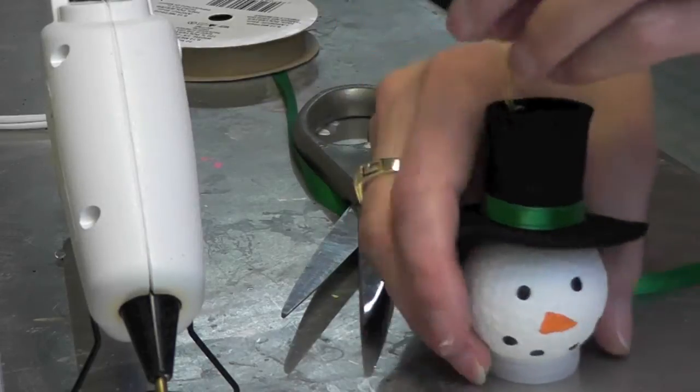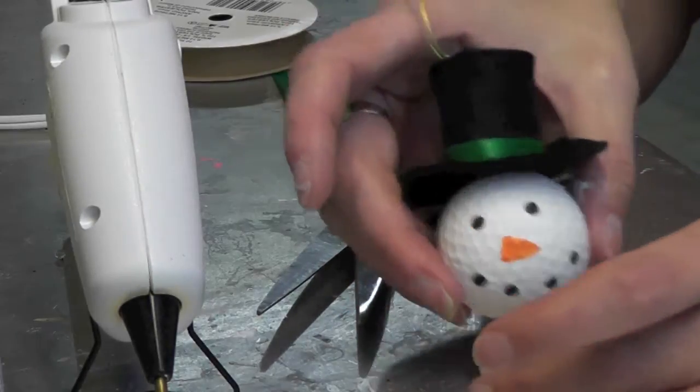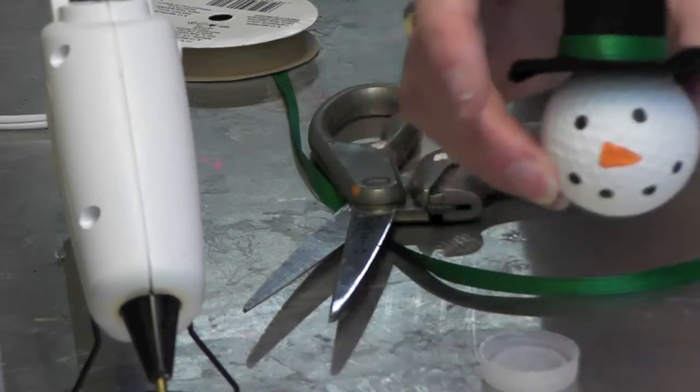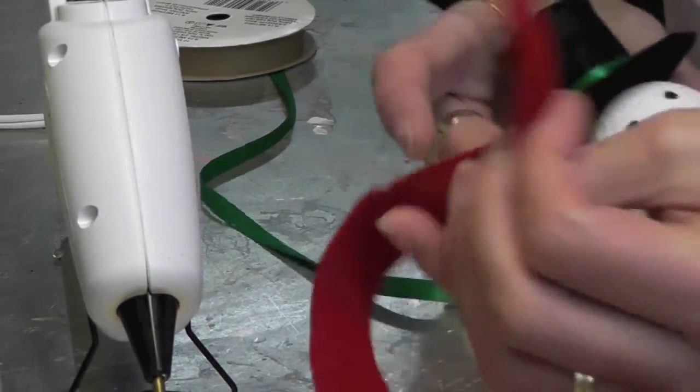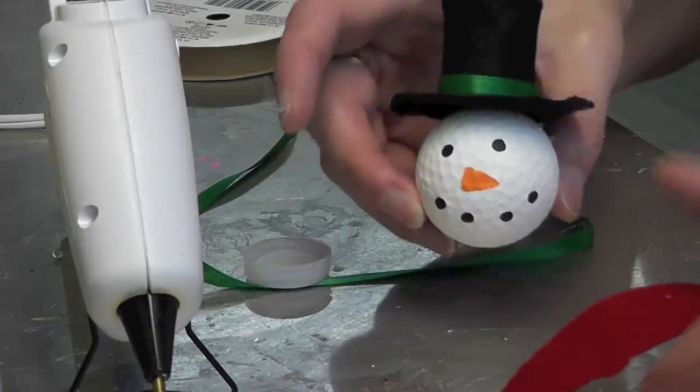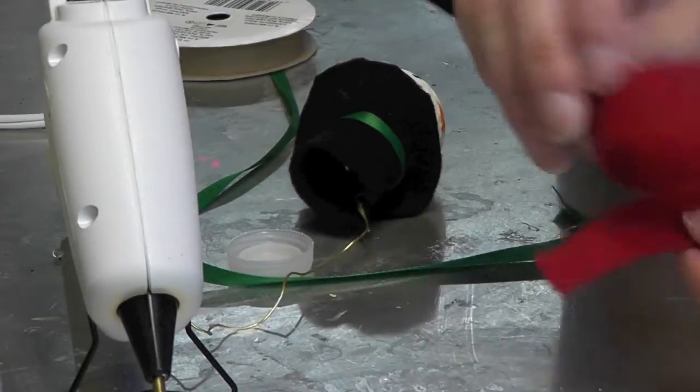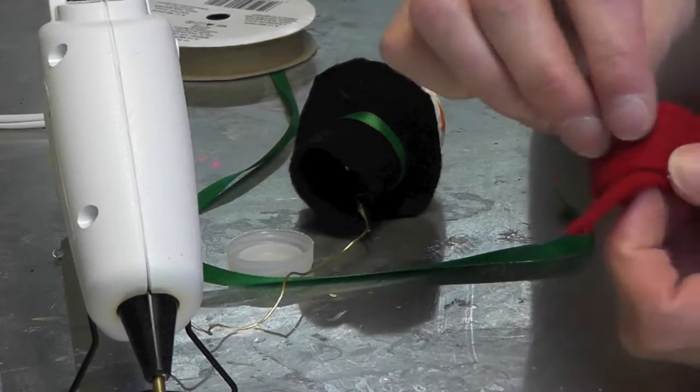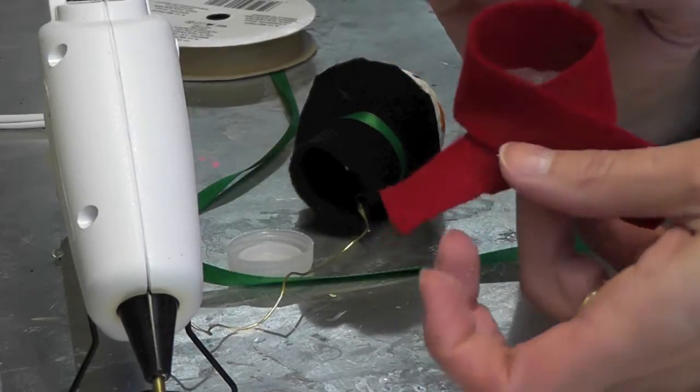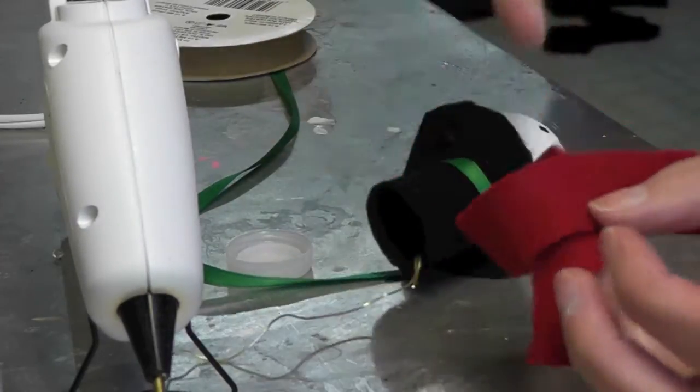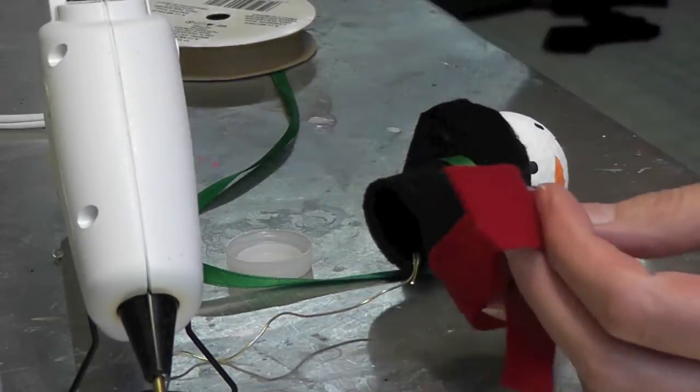Now you could do a scarf, which I'm going to do. I cut a length of red felt and I'm going to just kind of overlap it like this and see if he fits in there nicely. So then I'll tack it with some hot glue right here.